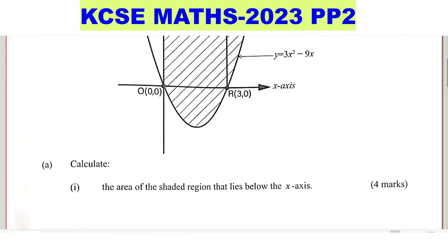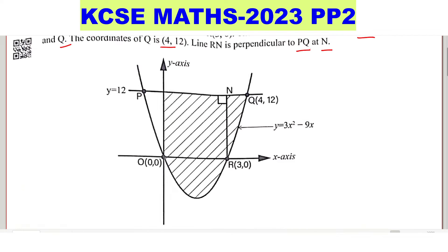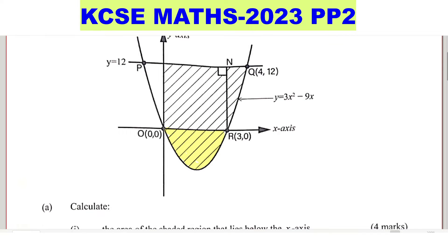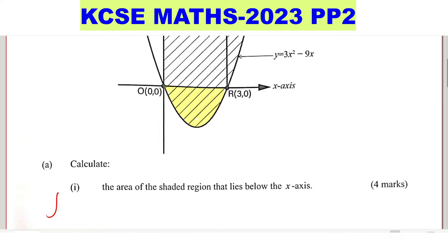Let's go to part A of the question — calculate the area of the shaded region that lies below the x-axis. So let's identify that area: it's the region I'm shading here. To get the area of that region, we are going to integrate using the function of that curve. The limits are from 0 to 3, and we integrate the function 3x squared minus 9x with respect to x.